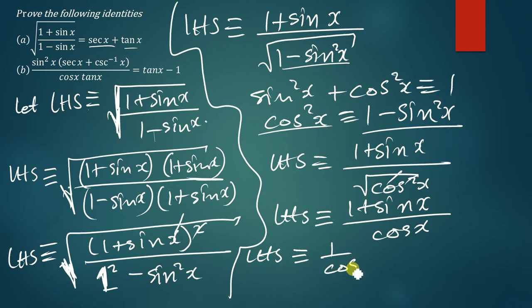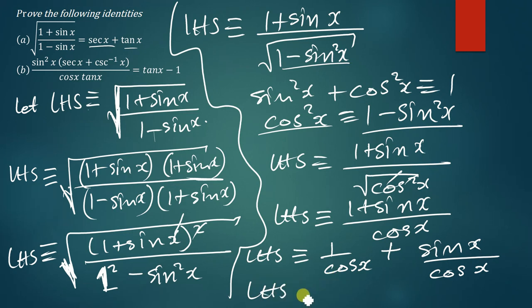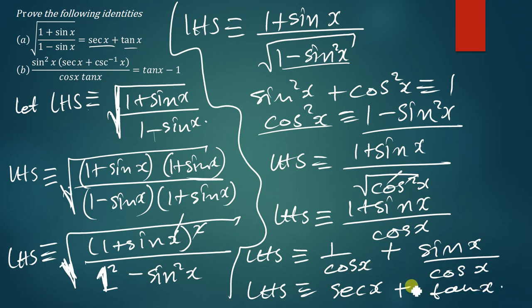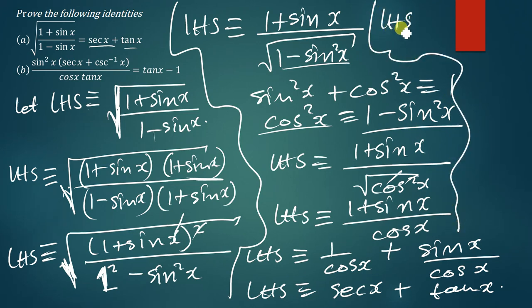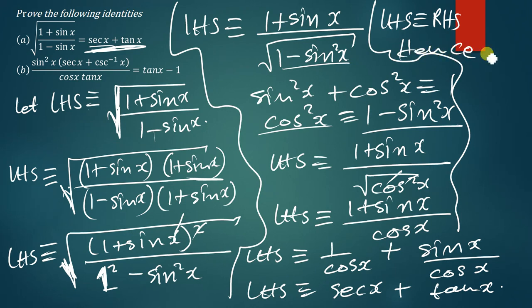This can be further written as 1 over cos x plus sin x over cos x. Now, 1 over cos x is simply sec x, and sin x over cos x is simply tan x. So the left-hand side equals sec x + tan x. Since the left-hand side equals the right-hand side, hence proved.